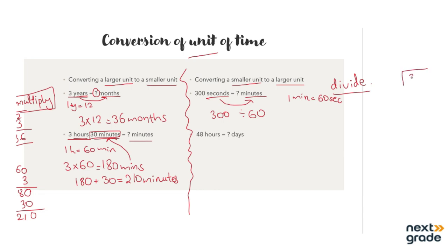Let's do the division: write 300 inside and 60 outside. A small trick — when both numbers end in 0, we cancel the zeros and just divide 30 by 6. Using the 6 times table: 6 fives are 30, so the answer is 5. That means there are 5 minutes in 300 seconds. Remember this trick — it will help with future questions.